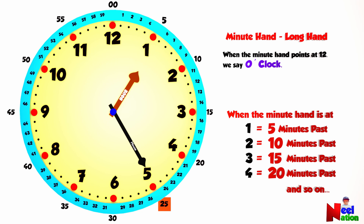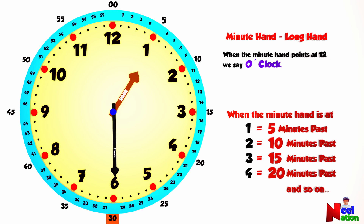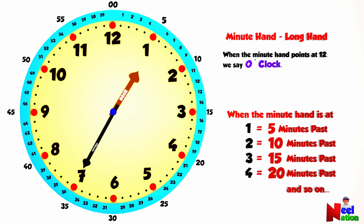When the hand is at 5, we say 25 minutes past. When the hand is at 6, we say 30 minutes past. We skip count by 5 every time the minute hand moves to the next point — 35. Now look closely: the minute hand is 3 points from 35, so 35 plus 3 is 38 minutes past.